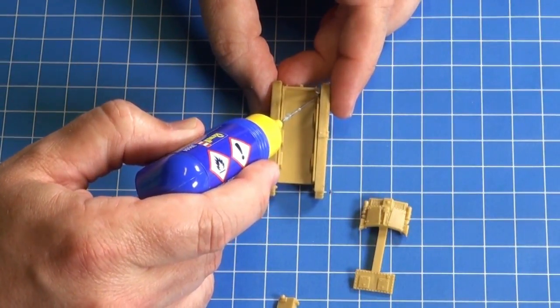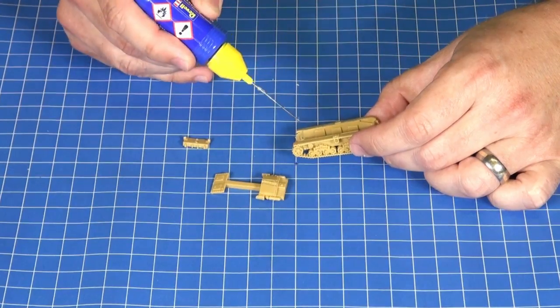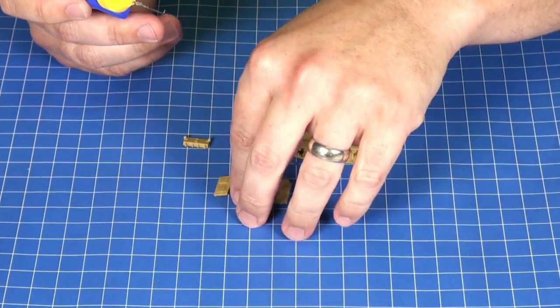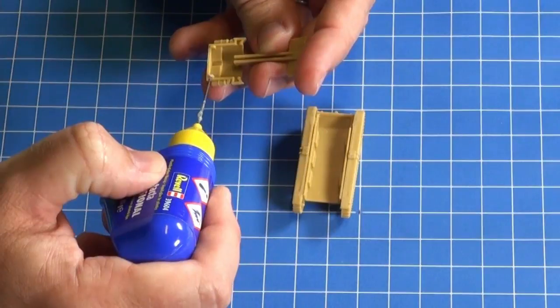As you can see I just run a bead of glue on the inside of the upper surfaces of that lower hull piece. And then on the rear of the upper hull piece.